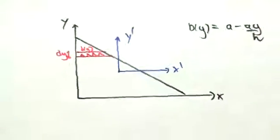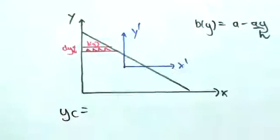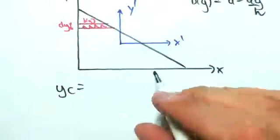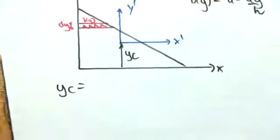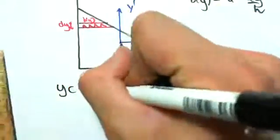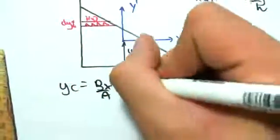So we're first going to find yc, the centroid. So we want to know yc. Where's our centroid from our reference axes? yc is just equal to bx on a.